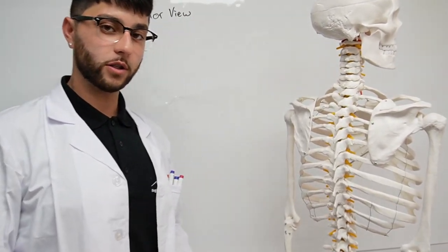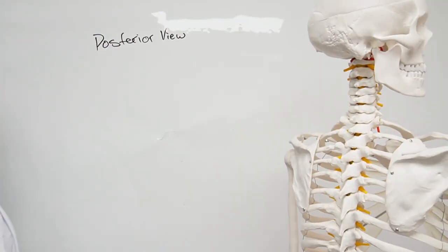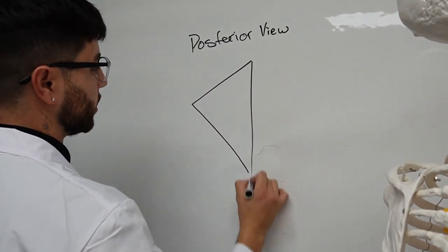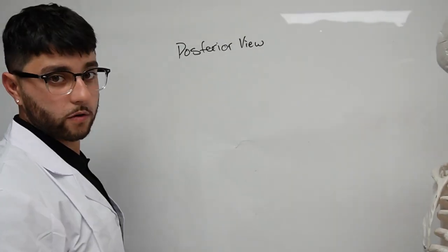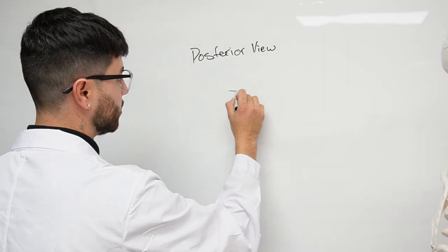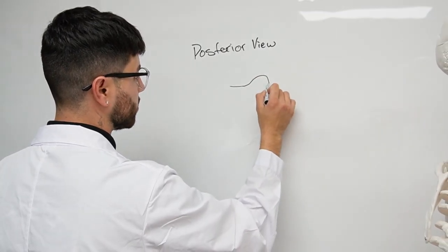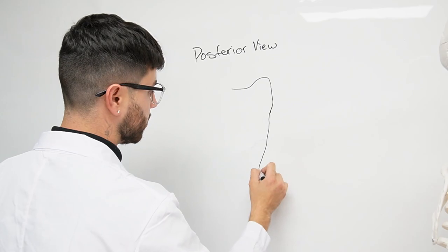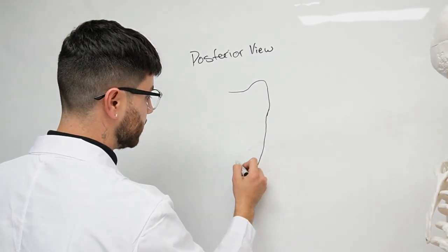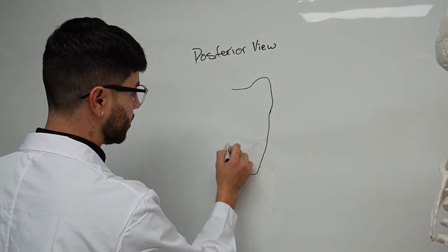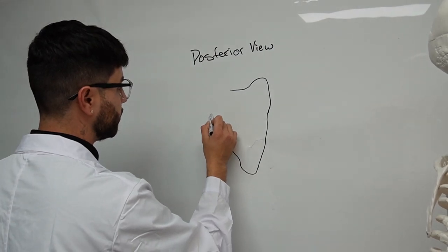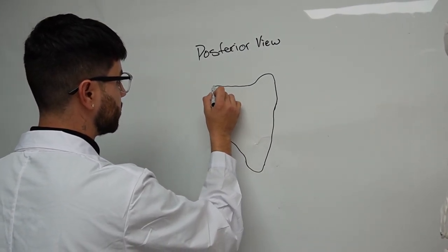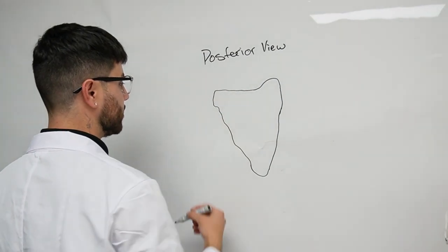You're going to start off with the general picture of the scapula. We're going to start off with the superior angle right here. This is the medial border, and then at the bottom right here is the inferior border, and then you've got the lateral border, and you've got the glenoid cavity.